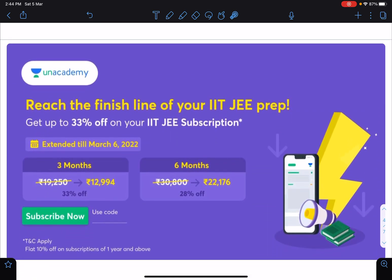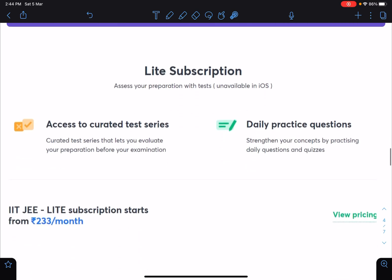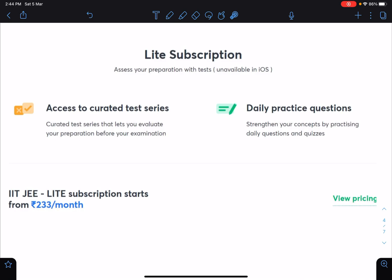The current offer of 33 percent off on your IIT JEE subscription has been extended till March 6th 2022. You can see three months is at roughly 12,000 to 13,000, and this is a six month subscription. So 33 and 28 percent off. You can use my code Nitin Sir if you want to connect with me on Unacademy. About this Lite subscription, you can access the test series for practice. You will have a lot of practice problems and it is very cheap, just 233 per month. So you can check this Unacademy Lite UA Lite subscription.